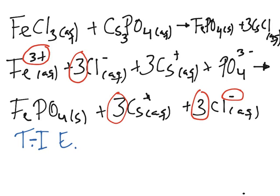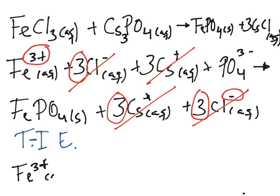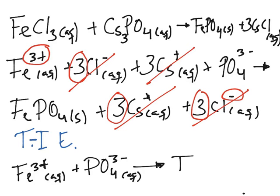Now for the net ionic equation, you simply take out all your spectator ions — the ones that repeat on both sides. The chloride ions cancel, and the cesium ions cancel. You are left only with the iron ion, Fe³⁺ aqueous, and the phosphate ion, PO₄³⁻ aqueous, forming FePO₄ solid. Always make sure to write the state of matter. This is our net ionic equation.